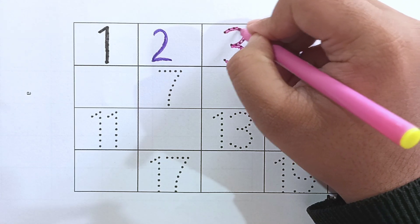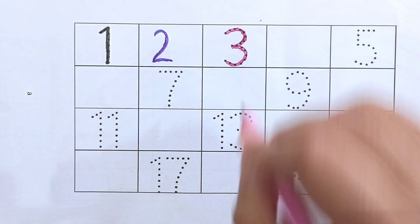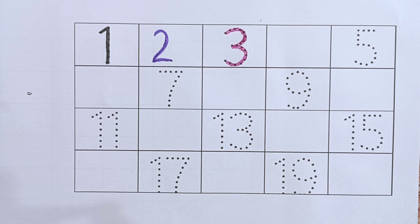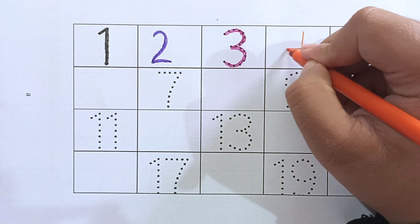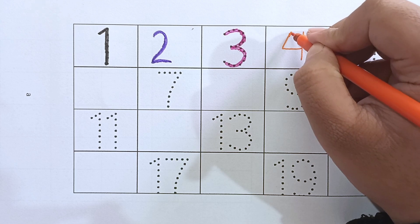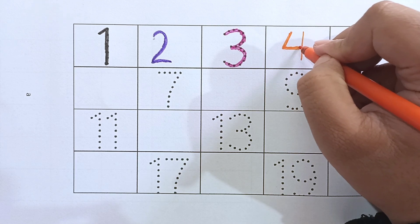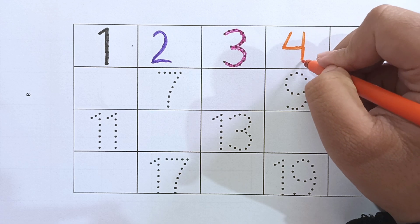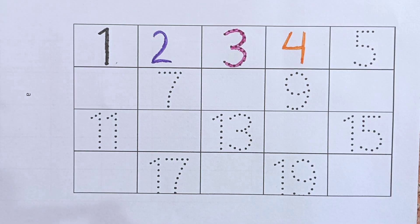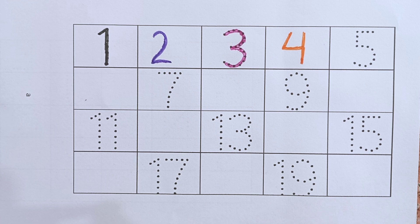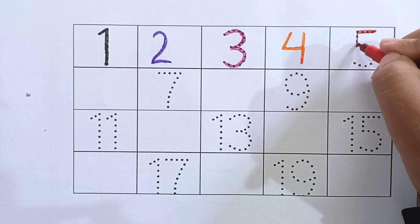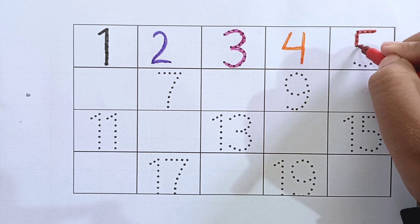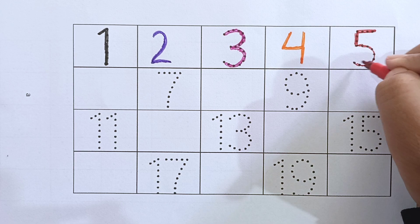This is 3. After 3, the next number will be 4. Now I'm writing 4. After 4, the next number is 5. Now I'm writing 5. This is 5.